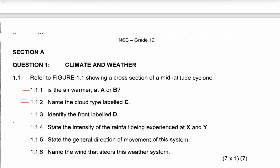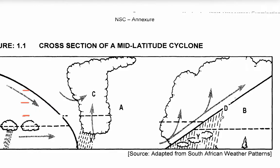Let's move to question 1.1.3: identify the front labelled D. I told you this is the warm front. The reason why this is the warm front is because you can see on the warm sector we have the type of clouds which are called nimbostratus clouds. You can see the shape — so we have nimbostratus clouds on that side.